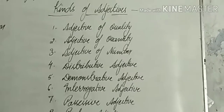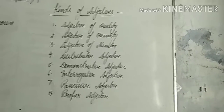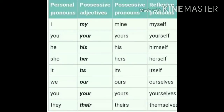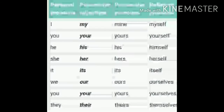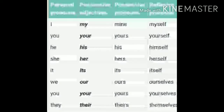These are the adjectives — write kinds of adjective in your copy too. Now see this chart of possessive adjective and possessive pronoun. I have told you possessive adjective in the kinds of adjectives, and possessive pronoun in the kinds of pronouns. They are similar, but let's see the difference between them and how we use them.